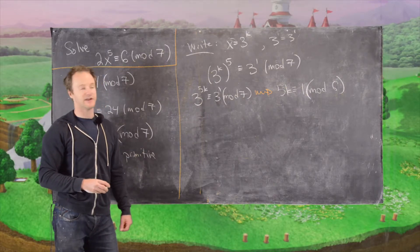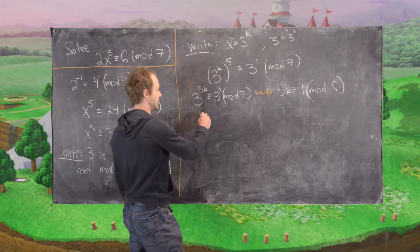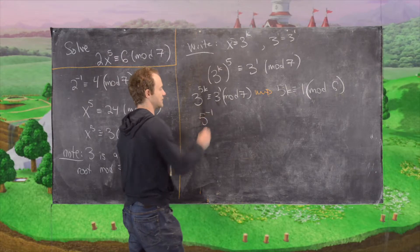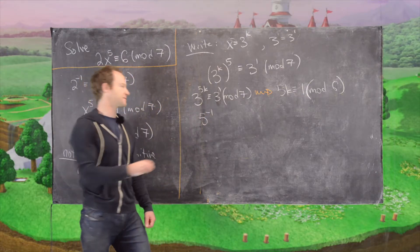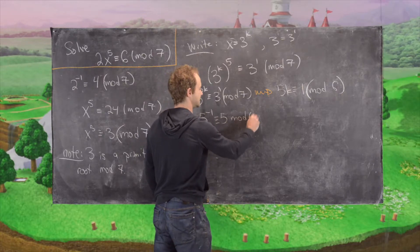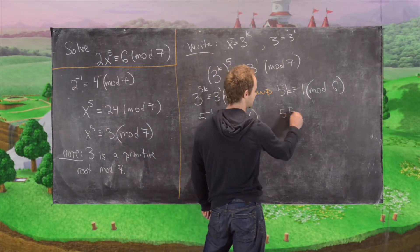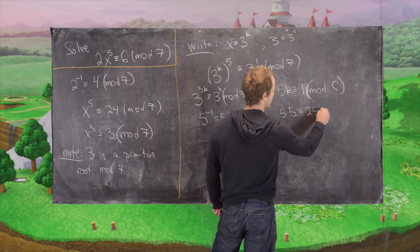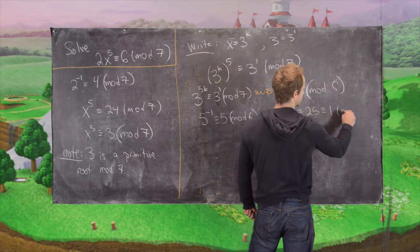And then we know that 5 is invertible mod 6. In fact, let's see, 5 inverse, we want to find 5 inverse mod 6, and that is 5 mod 6. And that's because 5 times 5 is equal to 25, which is congruent to 1 mod 6.